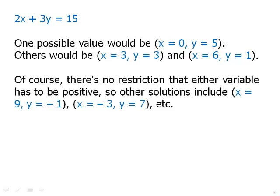Of course, there's no restriction that either variable has to be positive. So other solutions include x equals 9, y equals negative 1, or x equals negative 3, and y equals positive 7. And as you can imagine, we could make x more and more negative, make y more and more positive, or vice versa. So we could get quite a few solutions of that sort.